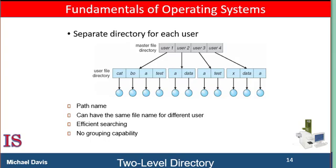To create a file for a user, the operating system searches only that user's file directory to ascertain whether another file of that name exists. To delete a file, the operating system confines its search to the local user file directory. Therefore, it can't accidentally delete another user's file that has the same name. The user directories themselves must be created and deleted as necessary. A special system program is run with the appropriate user name and account information, which creates a new user file directory and adds an entry for it to the master file directory. The execution of this program might be restricted to system administrators.